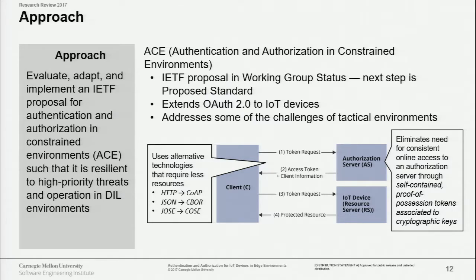ACE uses much less resource-consuming technologies than OAuth. Instead of HTTP, it uses CoAP — the Constrained Application Protocol — a very compact protocol. Instead of JSON, it uses CBOR — Concise Binary Object Representation. It also uses a proof-of-possession token, meaning the token is cryptographically attached to the client, so the resource server doesn't need to contact the authorization server for introspection — which is critical for DIL environments. Tokens also have expiration times, which is key to our threat model.